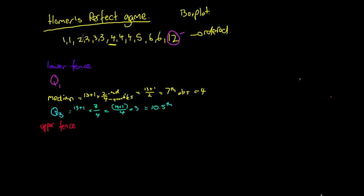To calculate the 10.5th observation, we go to our data and count 1, 2, 3, 4, 5, 6, 7, 8, 9, 10. This is our tenth observation, but we're after the 10.5th. As shown in the IQR video, it's just a simple averaging process. This is our tenth and this is our eleventh. We take the average: 5 plus 6 divided by 2. Our upper quartile will be 5.5.